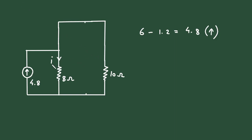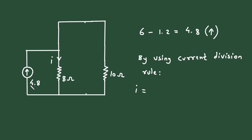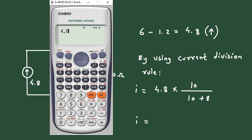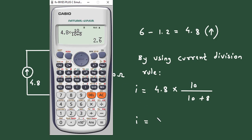Now we can easily find the value of current I by using the current division rule. Current I is equal to the total current 4.8 multiplied by the opposite parallel branch resistance. The opposite branch to the 8 ohm is the 10 ohm, so I equals 4.8 multiplied by 10 divided by (10 plus 8), which gives I equal to 2.6 ampere. This is how we find the current using the source transformation technique.